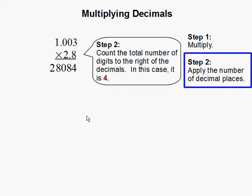Step 2: Count the total number of digits to the right of the decimal. In this case, it is 4.